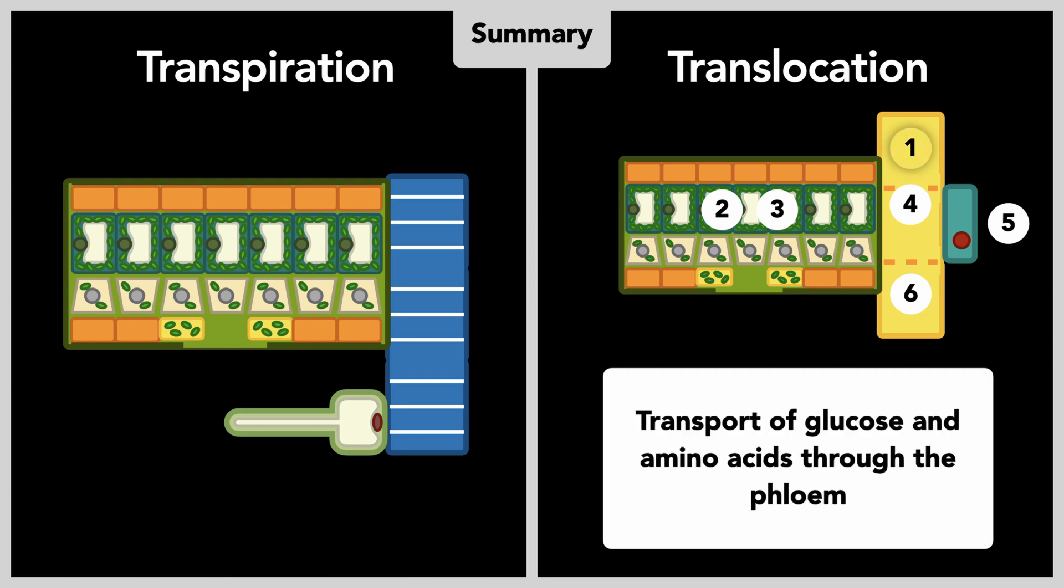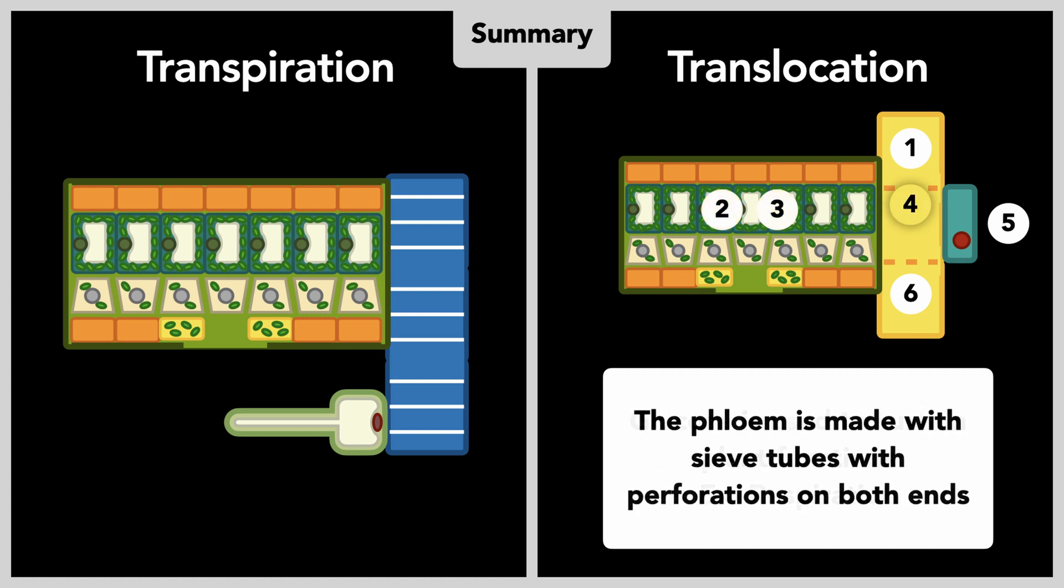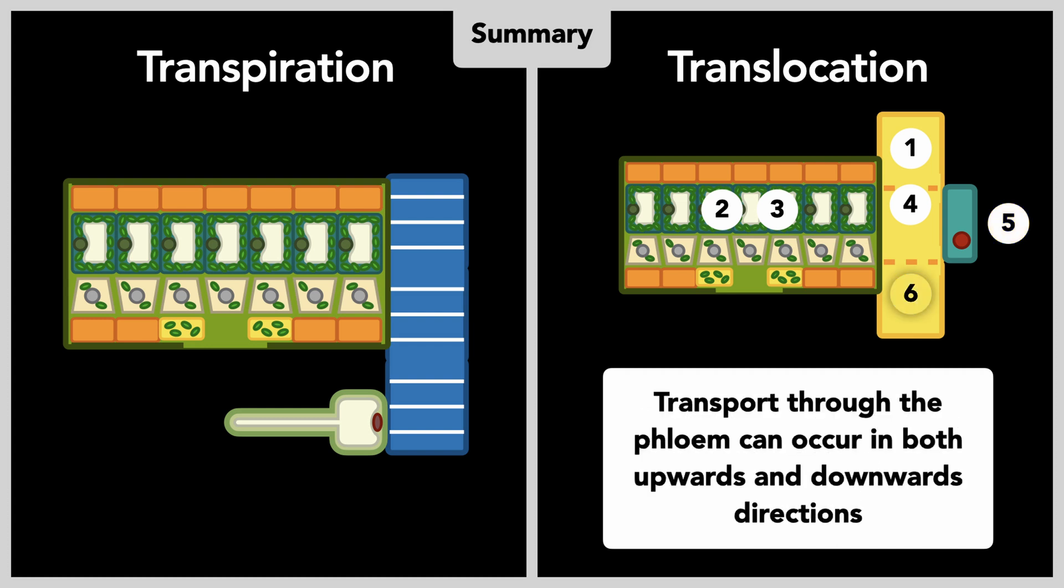Translocation is the transport of glucose and amino acids dissolved in water through the phloem vessels. Glucose is produced through photosynthesis by the chloroplast contained within the palisade mesophyll, and this sugar is used to sustain plant functions. The phloem tube is made up of cells with perforated ends, and is complemented by companion cells to provide energy. This energy allows for the upwards and downwards transport of substances.